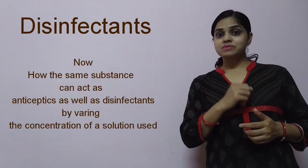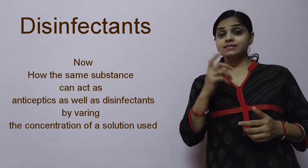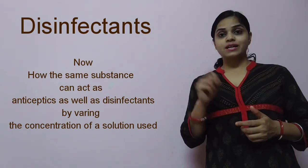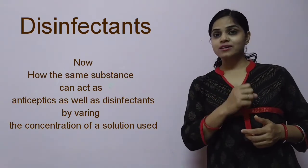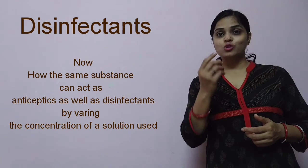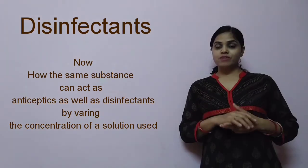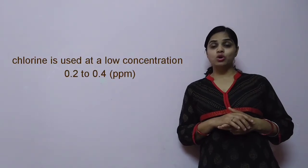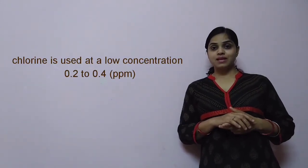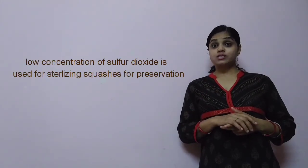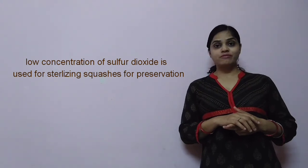Now, how can the same substance act as both an antiseptic and a disinfectant? By varying the concentration of the solution used. For example, chlorine is used for making water fit for drinking at a concentration of 0.2 to 0.4 parts per million. Similarly, low concentrations of sulfur dioxide are used for sterilizing squashes for preservation.